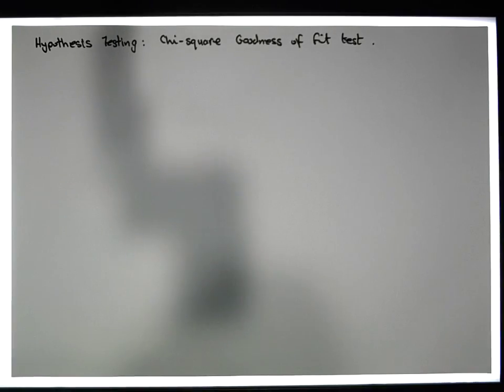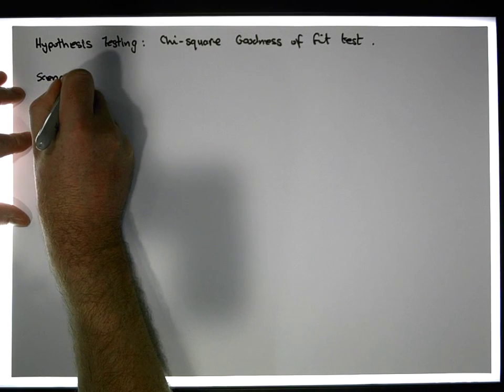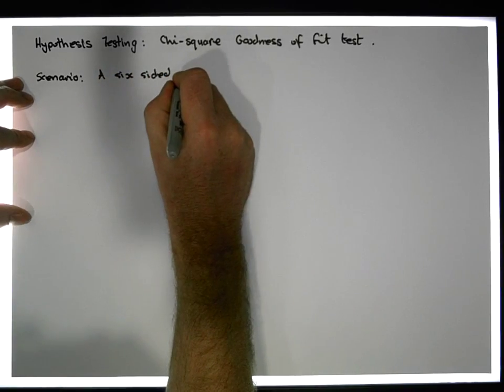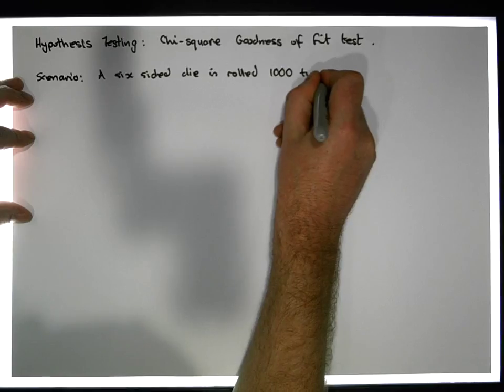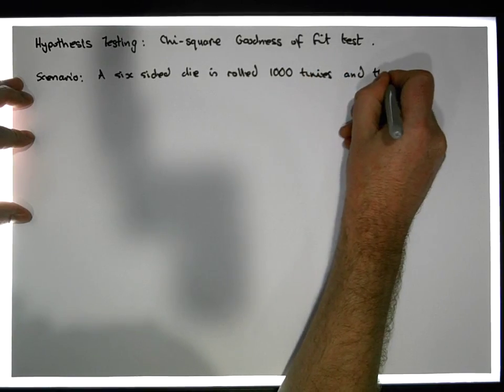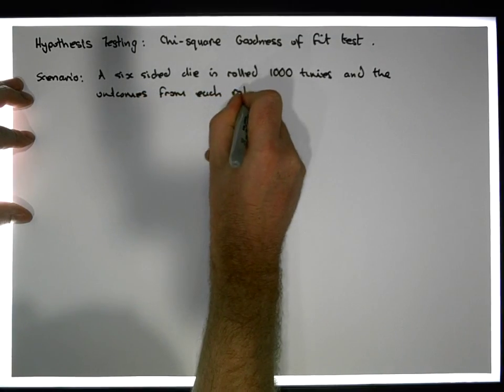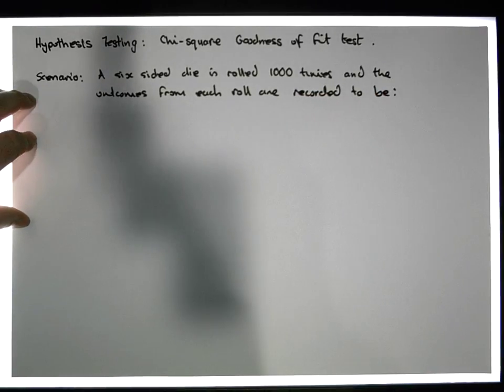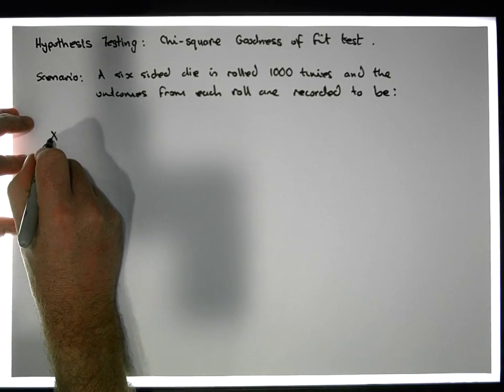The example I'm going to use is with respect to the rolling of a die. So the scenario is: a six-sided die is rolled 1000 times, and the outcomes from each roll are recorded.